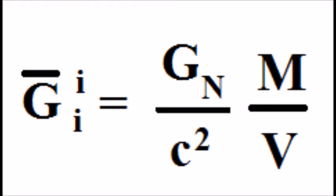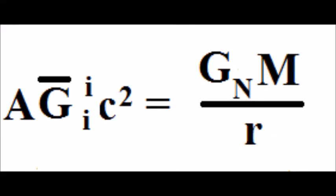Here we divide both the numerator and denominator on the right side by C squared. Finally we multiply both sides by area A and C squared. The result is Newton's gravity with units of velocity squared.